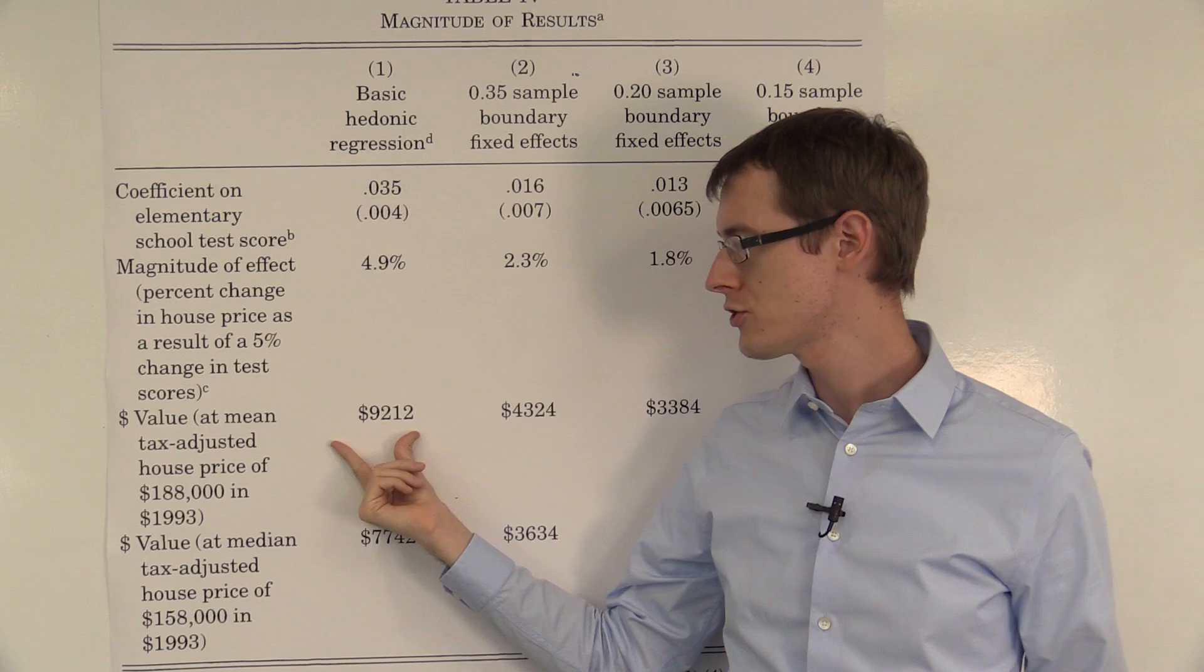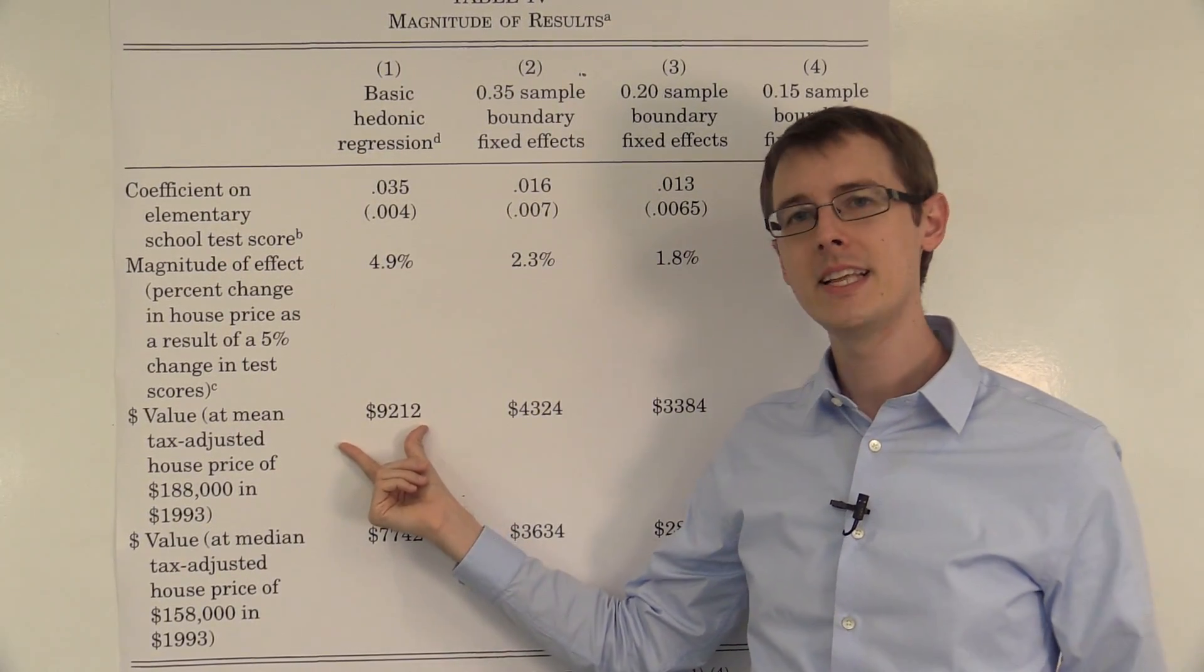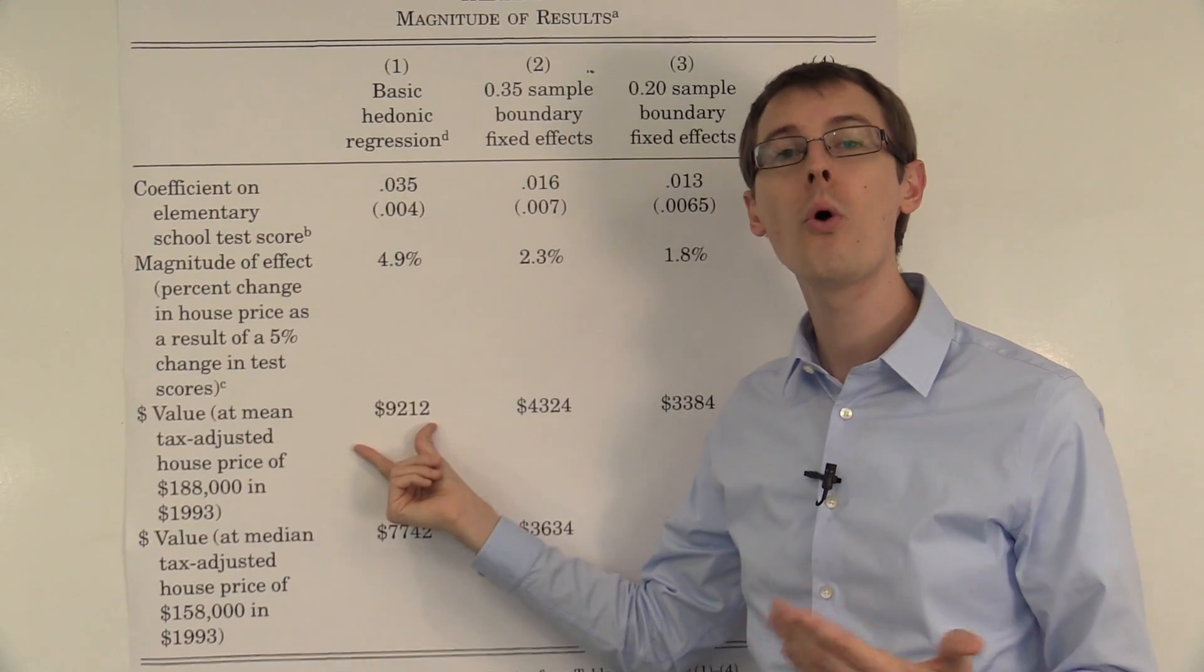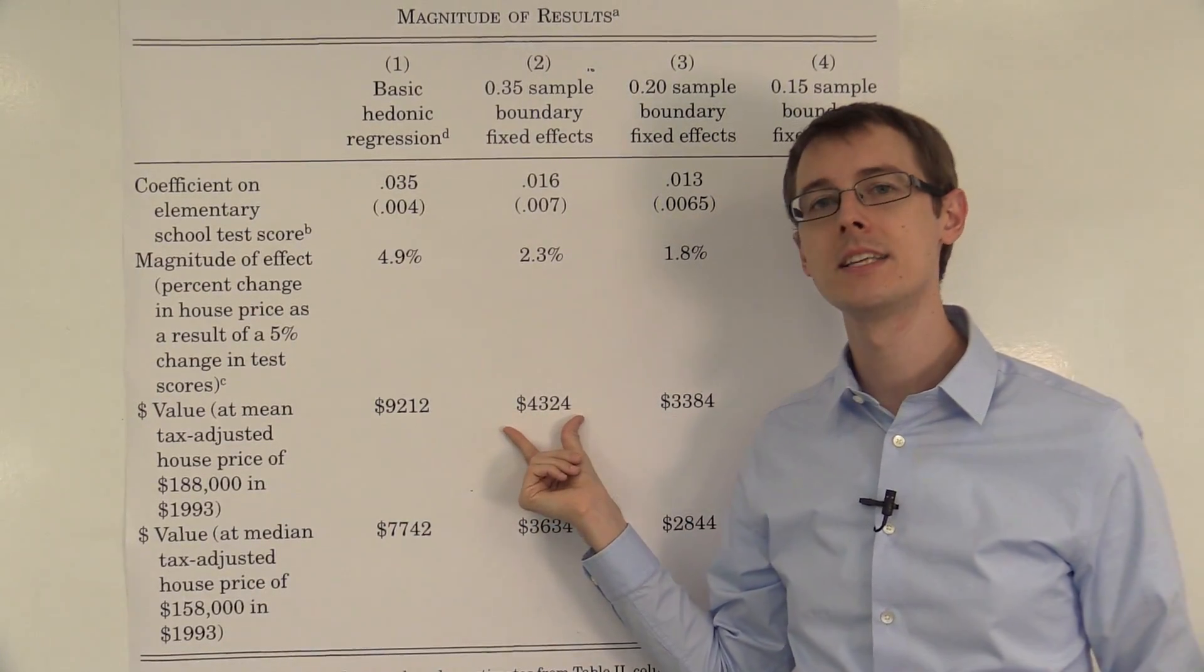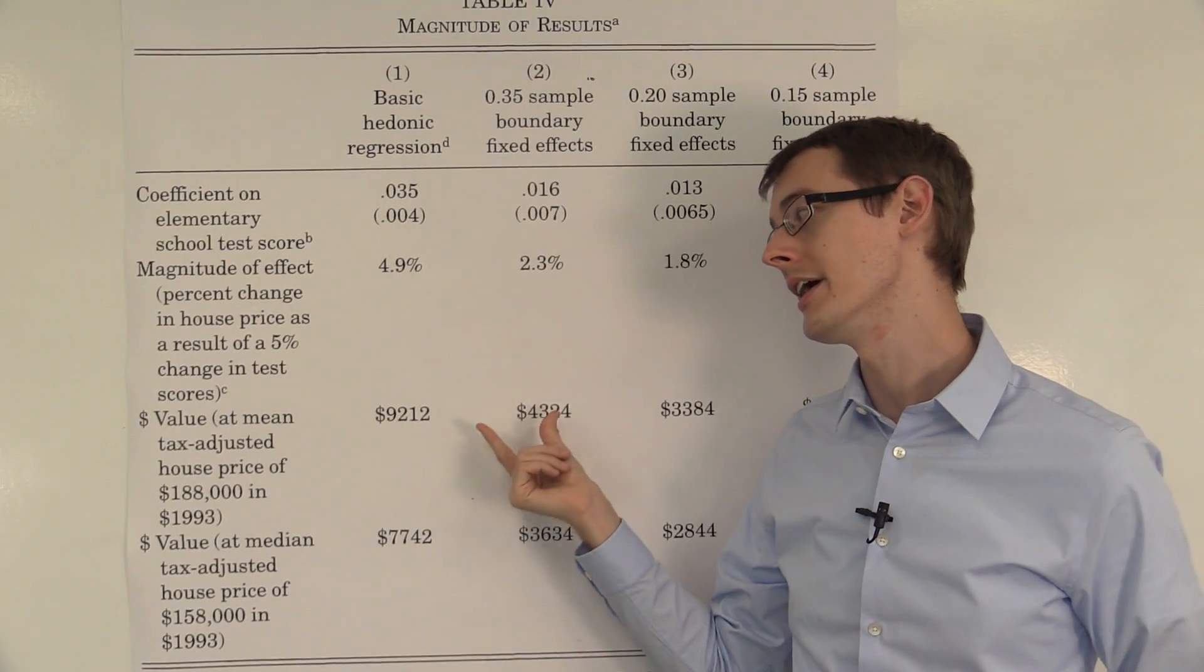And we can see that if we don't use the RDD to control for all these confounders, we get an effect that's almost twice or more than twice as large as once we actually do control for these confounders using the RDD analysis.